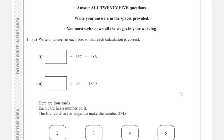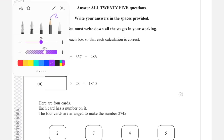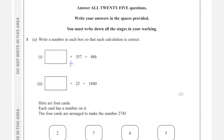Question number one: write a number in each box so that the calculation is correct. First, we see a number plus 357 equals 486. To find the answer we do the opposite — instead of plus 357, we do minus 357. We borrow: 16 minus 7 is 9, 7 minus 5 is 2, 4 minus 3 is 1. The answer is 129.